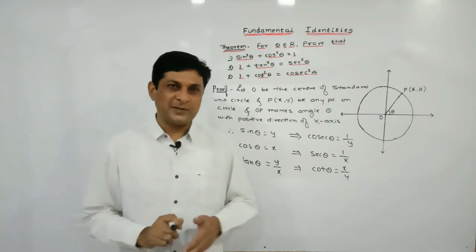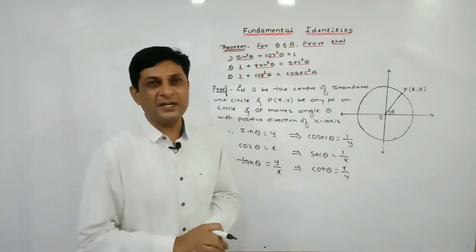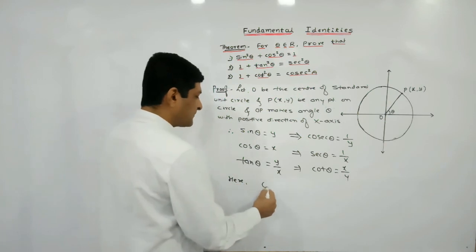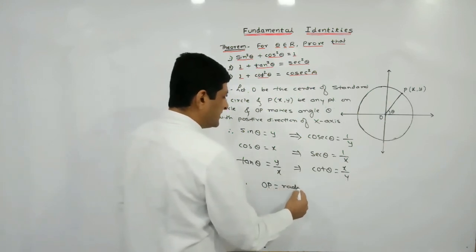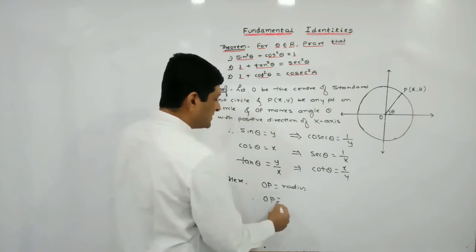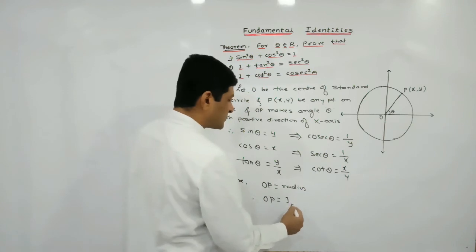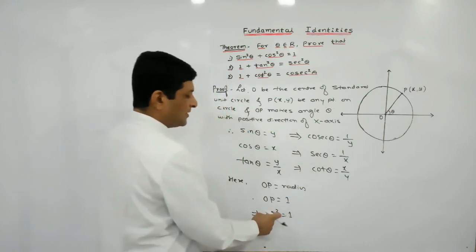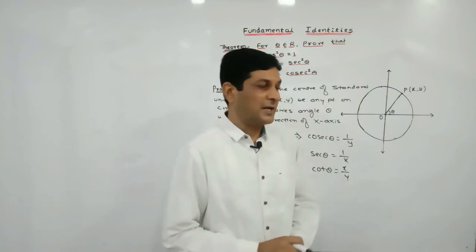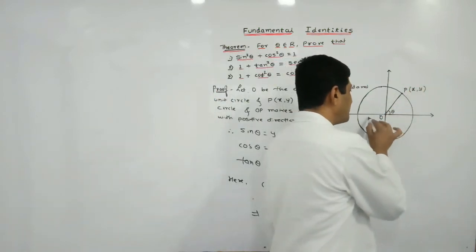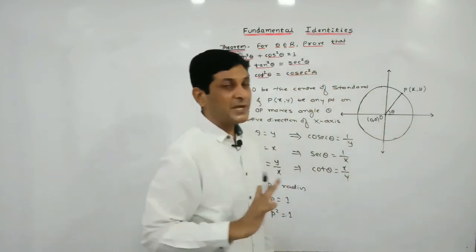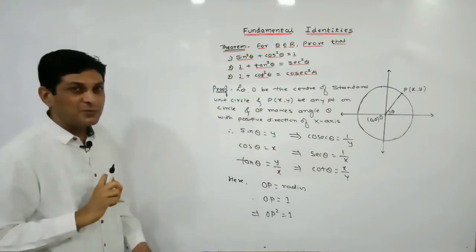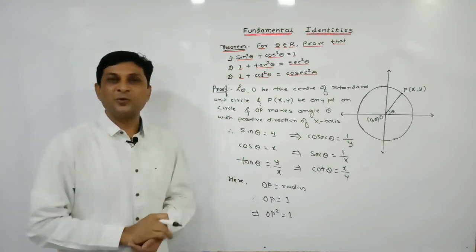Now observe this figure very carefully. OP is nothing but the radius of this circle, so OP equals the radius. Since the circle is a standard unit circle, radius equals 1, which implies OP squared equals 1. Now we are finding the distance between these two points using the distance formula. The coordinates of point P are (x, y) and the coordinates of the origin are (0, 0).